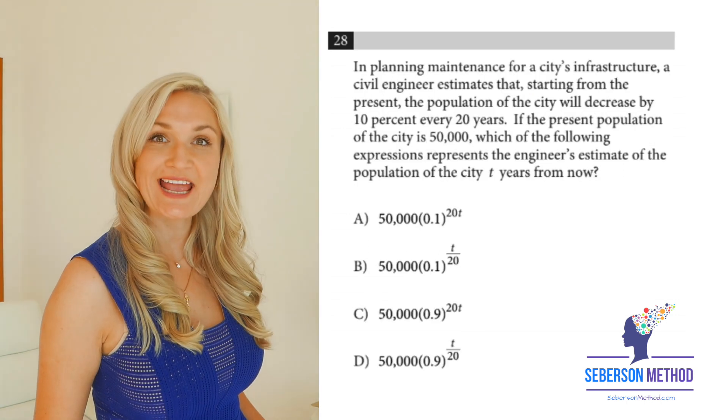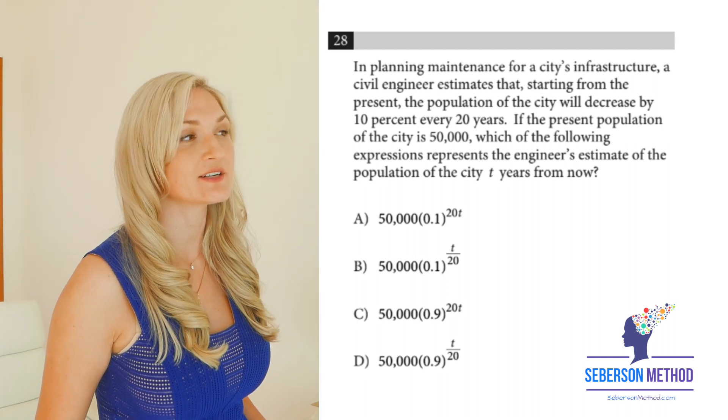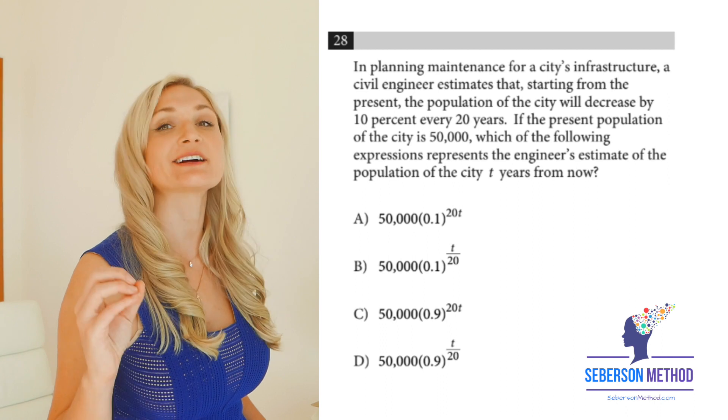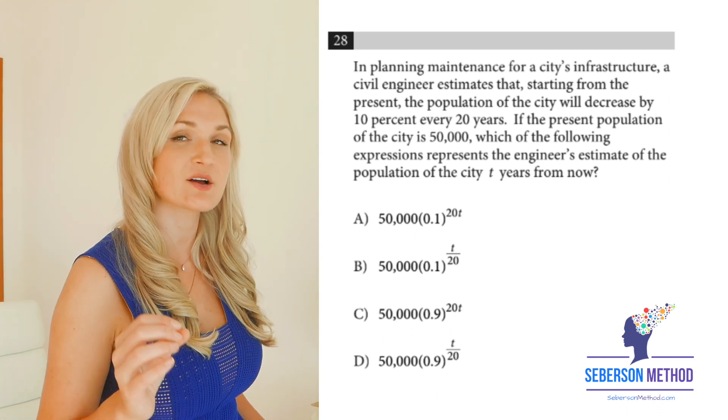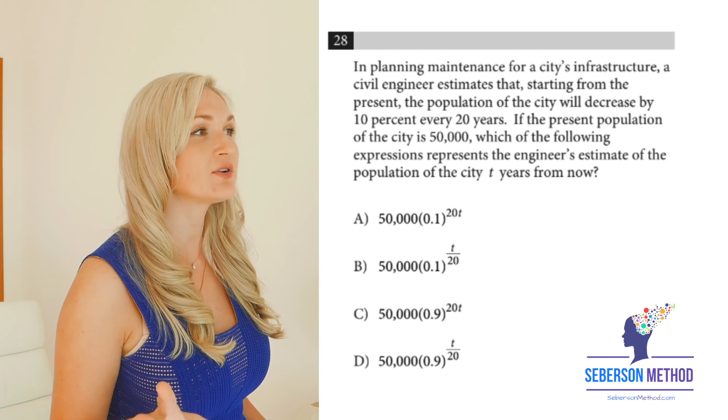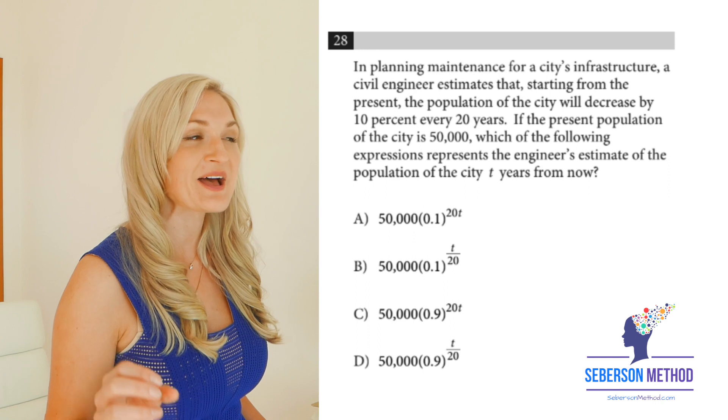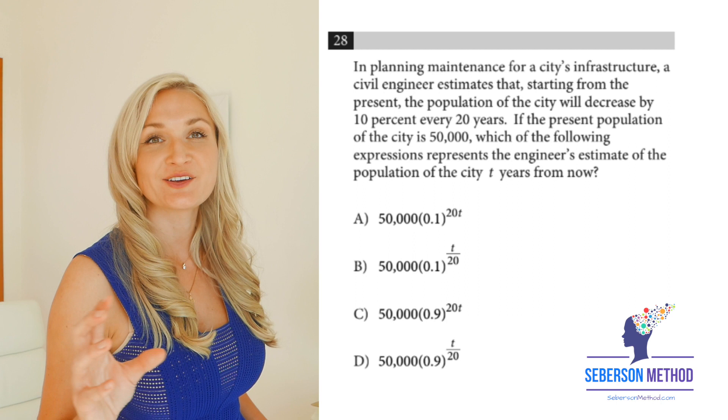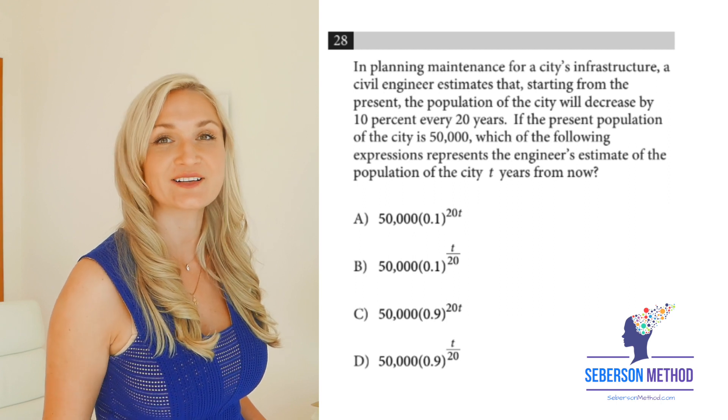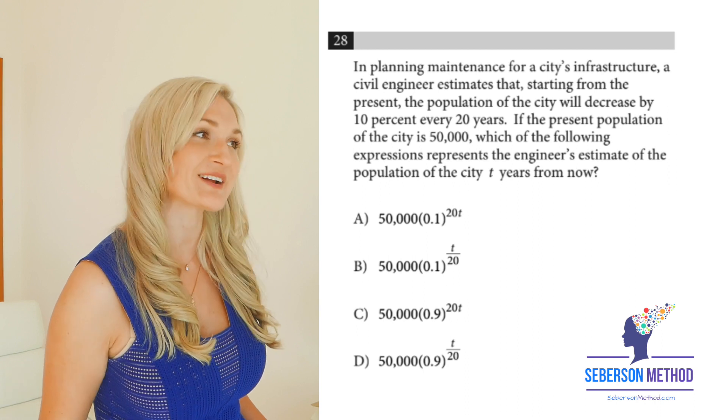This is problem number 28 from the official SAT test three. Here, they're giving you a word problem, and they're asking you to come up with an exponential function based on the word problem. For many of you, it's going to be pretty easy to eliminate two of the answer choices. But only if you are telling the story of the function, you're going to decide on your final answer. So pause the video, try it out by yourselves and get back to me.